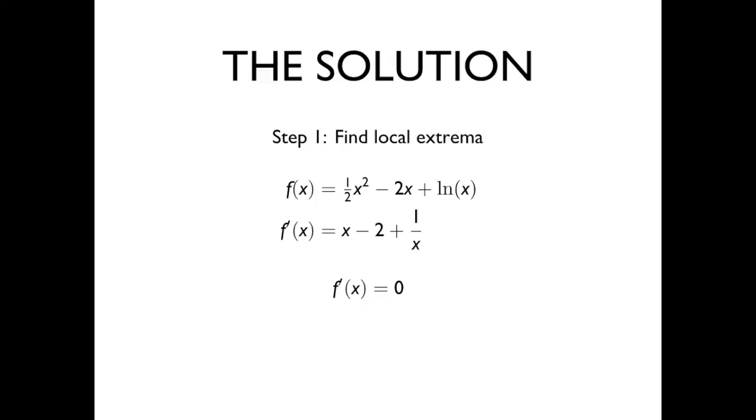If we multiply both sides of this equation by x, then we find that the first derivative is 0 when x squared minus 2x plus 1 is 0. We can factor this equation into x minus 1 squared, which tells us that our only critical point is at x equals 1.